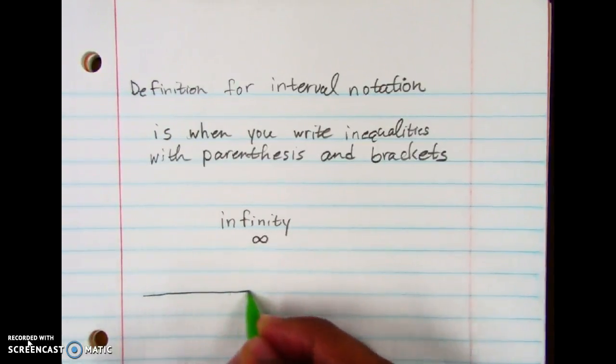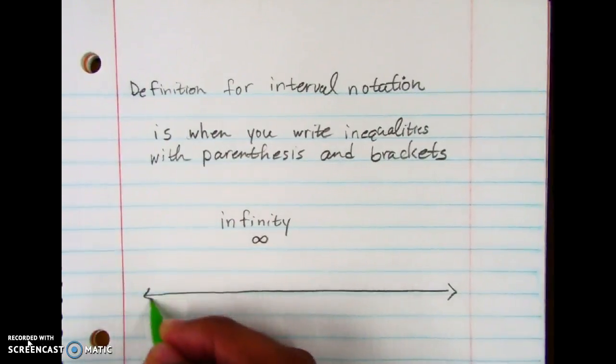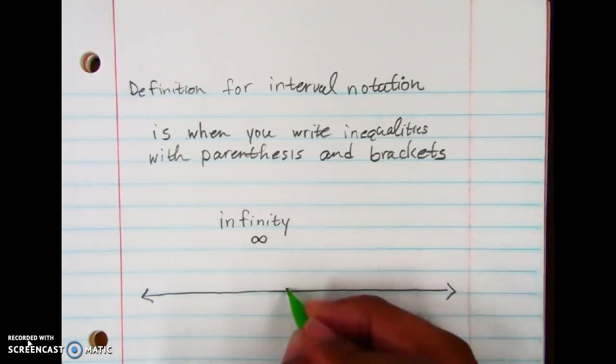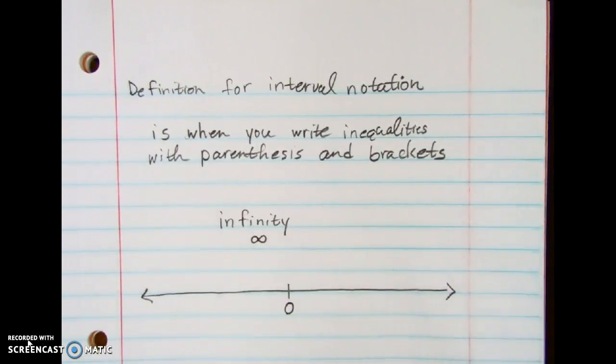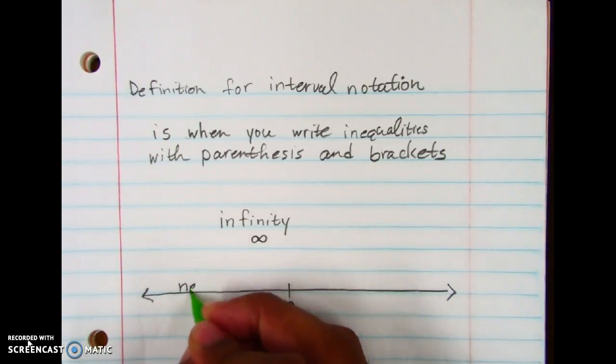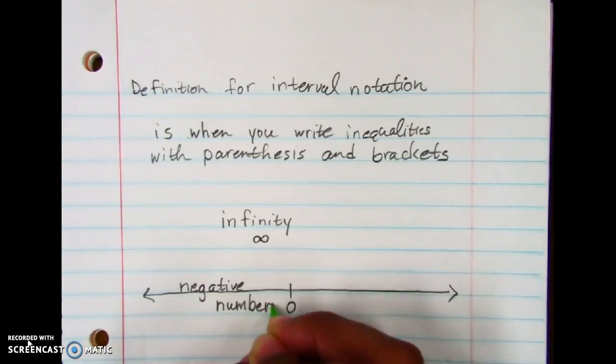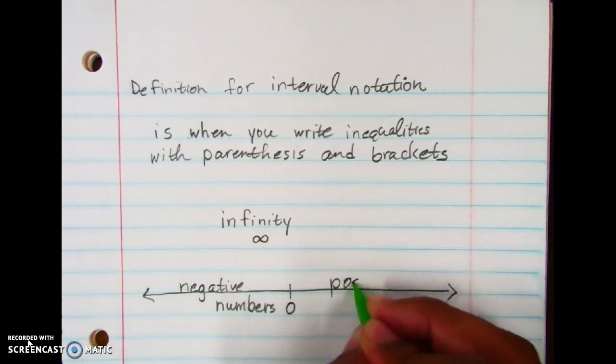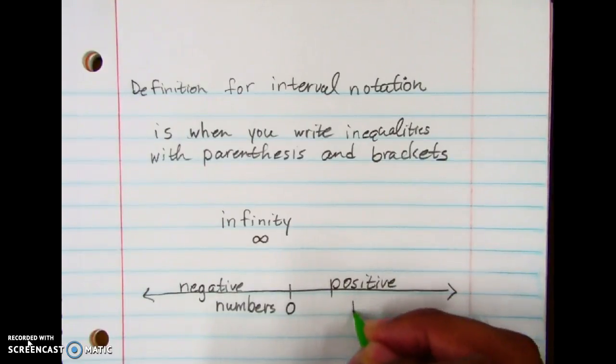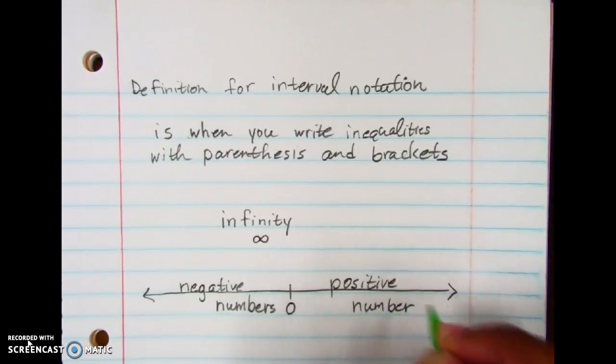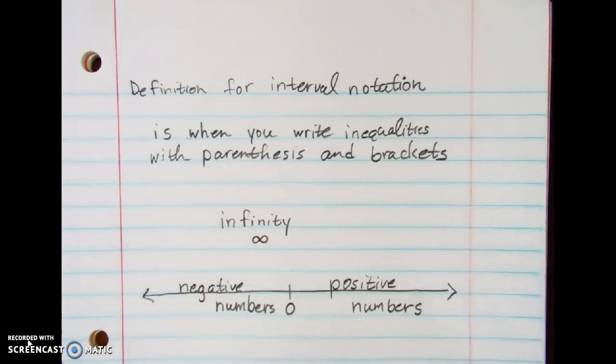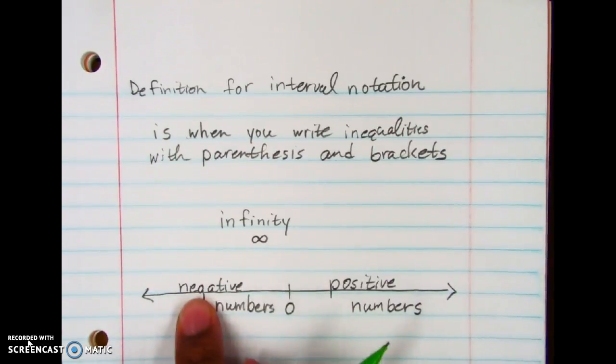So we're going to draw a number line here, and on a number line we're going to put zero directly in the middle, smack dab in the middle. Now with that, we're going to do this part because on a number line we have negative numbers here on the left side and we have positive numbers here on the right side. So like positive one, positive two, positive three, positive 100, positive 2,000, stuff like that. So that's our positive numbers here on this side, over here on the right side.